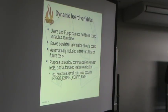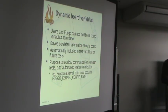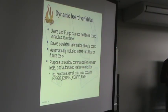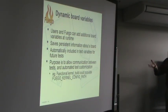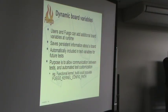We added dynamic board variables. Previously, board attributes were statically defined by the user during setup. Dynamic board variables allow tests and users to add additional variables at runtime, saving persistent information about the board that's automatically included in the test environment. For example, an installer could probe the board, find information about it, and save those off as board variables. Or a kernel build test can save the config path as a board variable, notifying other tests in the system where that config path is.